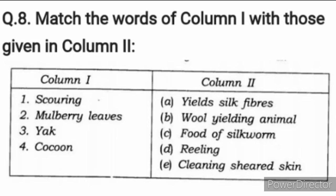Question number 8: Match the words of Column 1 with those given in Column 2. Shearing — cleaning sheared skin. Mulberry leaves — food of silkworm. Yak — wool yielding animal. Cocoon — yields silk fibers.